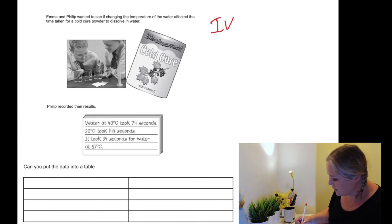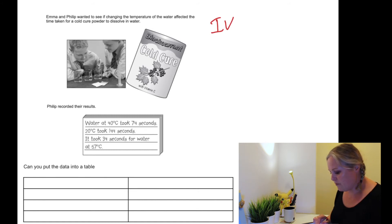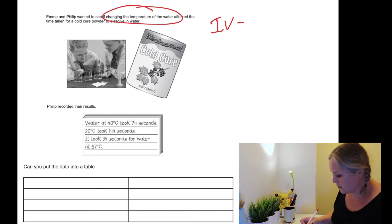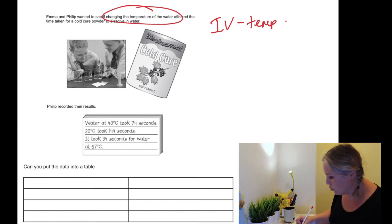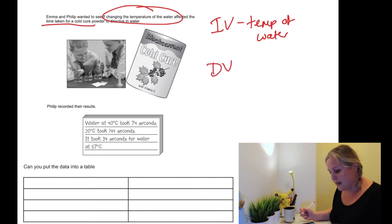The independent variable is the variable that is changed in the investigation. So what are they changing? Emma and Philip want to see if changing the temperature of the water affected the time taken for the cold cure powder to dissolve in water. So they were changing the temperature of the water. And what were they measuring — the dependent variable? The time taken for the cold cure powder to dissolve in water.